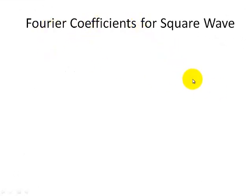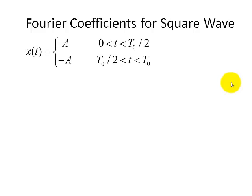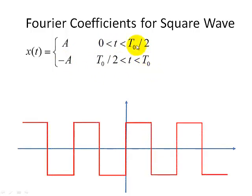Now let me show you the Fourier coefficients for a square wave. I'll just give you the result — I'll derive the details in a later video. What I want to motivate is that a square wave can be composed of other sines and cosines. The square wave x of t is equal to positive A between 0 and T0/2, and negative A between T0/2 and T0. Graphically, x of t has a height of A for half a period and negative A for the other half, with period T0 being when the function starts to repeat.